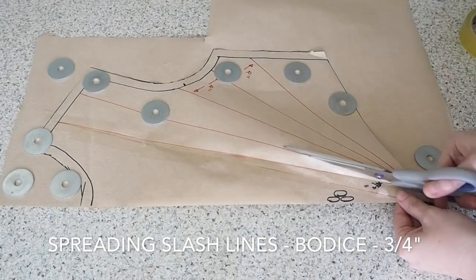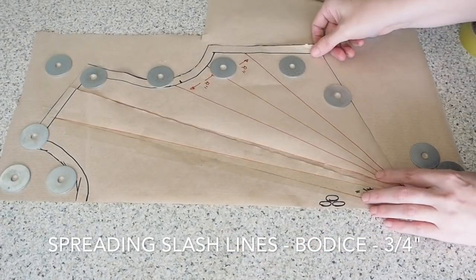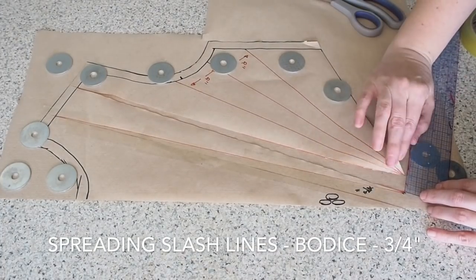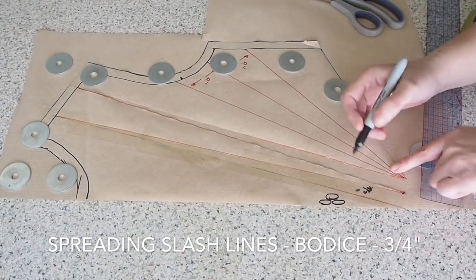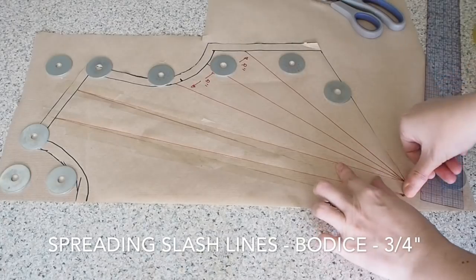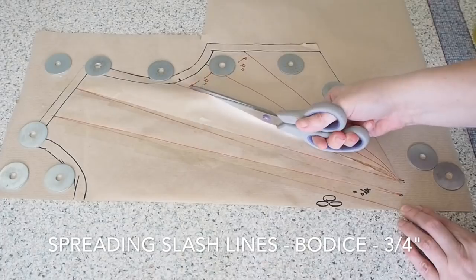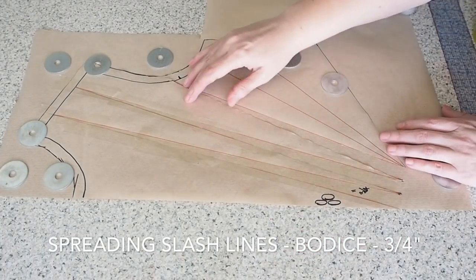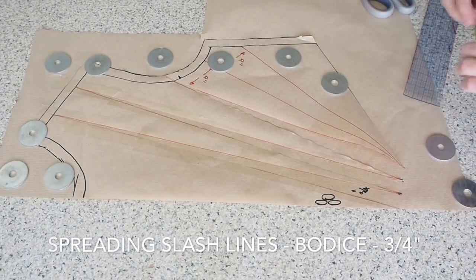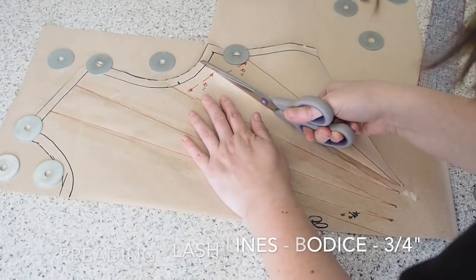So I'm cutting through those lines I drew, stopping just short of the top. Opening up my pattern piece. Measuring to make sure that I'm at three quarters of an inch. Popping in a little dot. And then once I'm happy everything is lying nice and flat, I'm sticking everything down. And I'm doing exactly the same thing to all of the slash lines on the bodice and exactly the same on the skirt. So slashing open the line, measuring my three quarters of an inch, making sure my pattern paper is nice and flat, and sticking everything down once I'm happy.